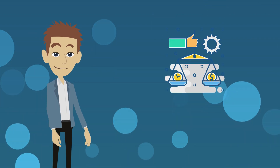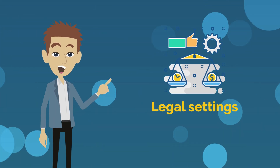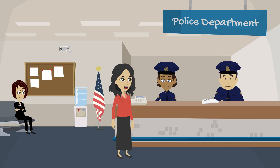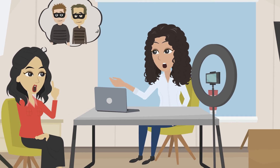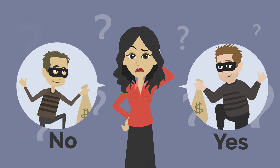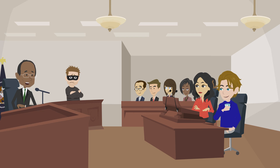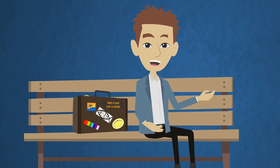This effect has considerable implications, especially in legal settings. For example, when an eyewitness to a crime is exposed to incorrect details, either through discussions, media reports or leading questions, their testimony might reflect that misinformation rather than the actual event. This can have serious consequences in court decisions and highlights the need for careful handling of witness accounts.